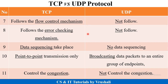TCP also follows an error checking mechanism. Suppose the receiver did not receive particular data — TCP identifies the error and retransmits that data again. UDP does not follow any error checking mechanism. In TCP, data sequencing takes place, meaning all data is sent between sender and receiver in sequence. In UDP, no data sequencing takes place.